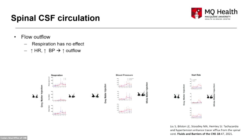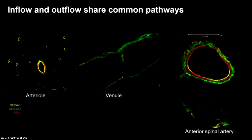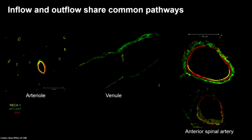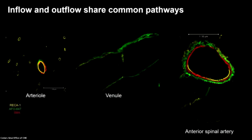Once CSF gets into the parenchyma it has to get out, and our studies show that cardiac influences — heart rate and blood pressure — are the most important determinants of CSF exiting the spinal cord. Respiration actually has no influence on outflow. There is some evidence of glymphatic unidirectional flow in the brain, but in the spinal cord I think we've demonstrated that unidirectional flow does not occur.